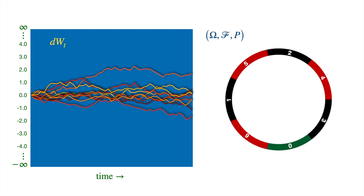The sample space there was easy — it's just the set of outcomes, which are the seven pockets numbered from 0 to 6, and the sigma algebra is not hard either. One can take the power set as a sigma algebra. It will capture all events one might be interested in, but there are too many sets and one can usually do with fewer sets.